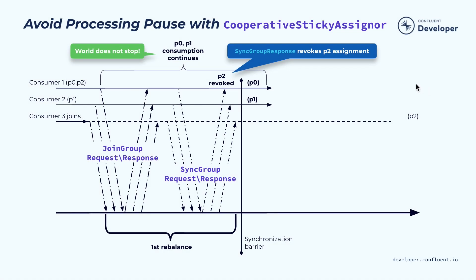Another improvement we made is through what we call the cooperative sticky partition assigner. This is used to solve the paused processing issue. At the beginning of the rebalance, each consumer will not immediately revoke the previously assigned partition. Instead, they will include those previously assigned partitions as part of the join group request to the coordinator. During the rebalance, the group leader will try to only send back the revoked partitions for each consumer instance. In this case, only partition two will be revoked from consumer one, while partition zero and partition one's data can continue to be processed.